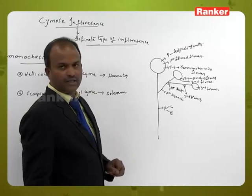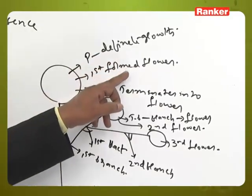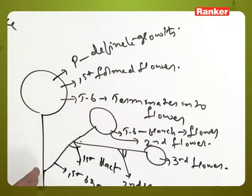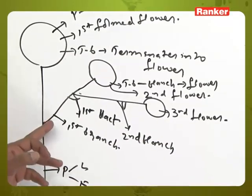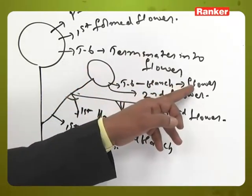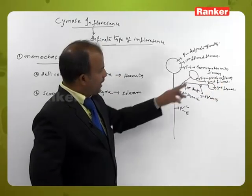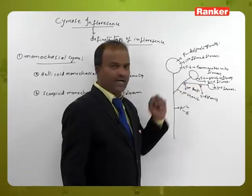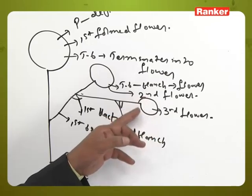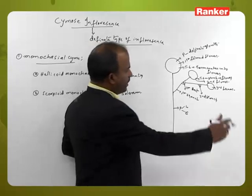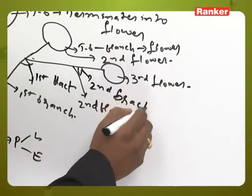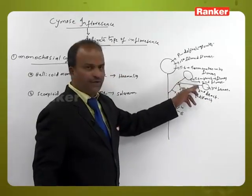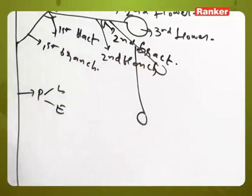The peduncle is long elongated. The terminal bud opens into the first formed flower, showing definite growth. From the base of the first flower, the first branch arises, also showing definite growth, terminating into the second flower. The second flower is opposite to the first bract. From the base of the second flower, the second branch arises, terminating into the third flower, which is opposite to the second bract.